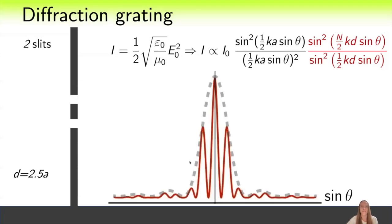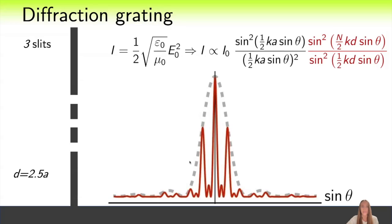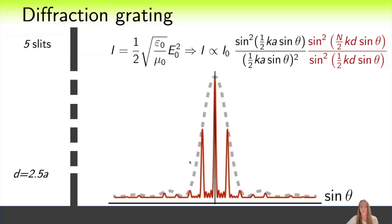When the second slit is added, the envelope remains the same, but additional minima appear. And in general, as the number of slits increases, the pattern is easy to follow. The diffraction pattern contains main maxima, between which there are N minus 2 additional maxima, where N is the number of slits.